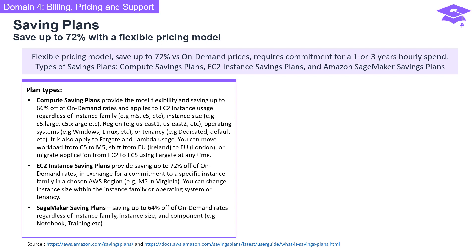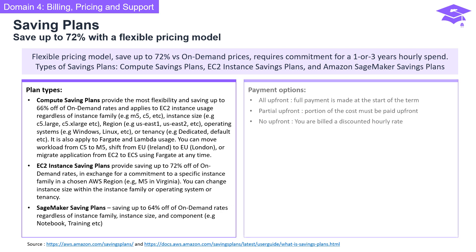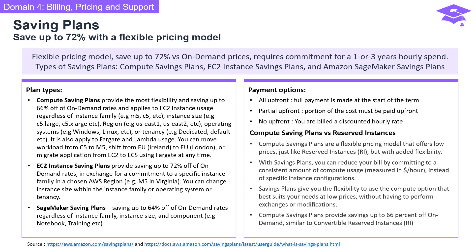SageMaker savings plans provide savings up to 64% off on-demand rates, regardless of instance family, size, or component such as notebook or training. For payment options, there are three choices: all up front — a full payment at the start of the term; partial up front — pay a portion of the cost up front; or no up front — billed at the discounted hourly rate.